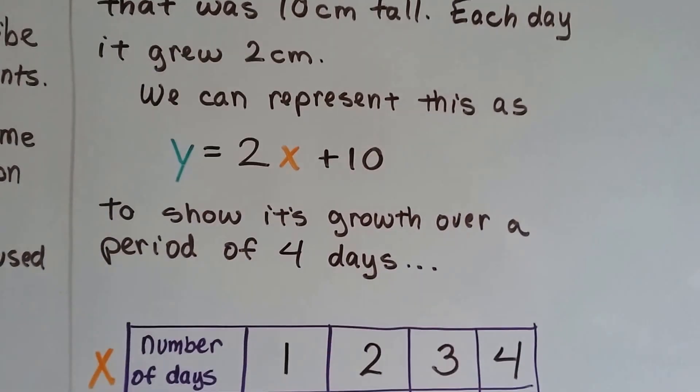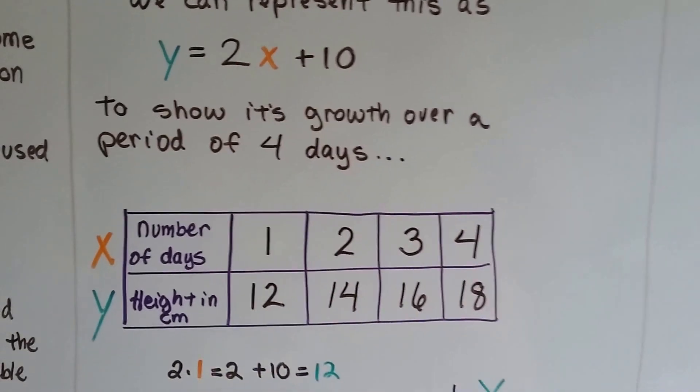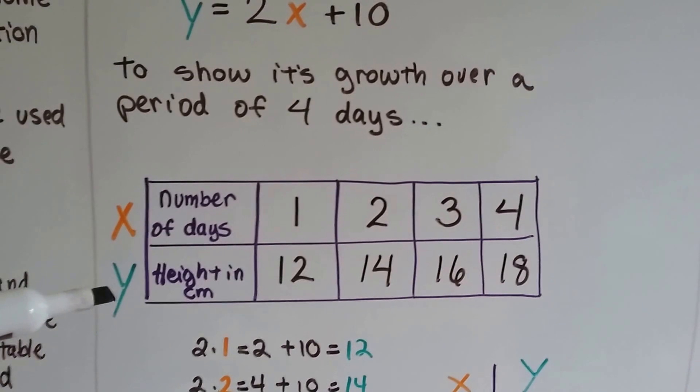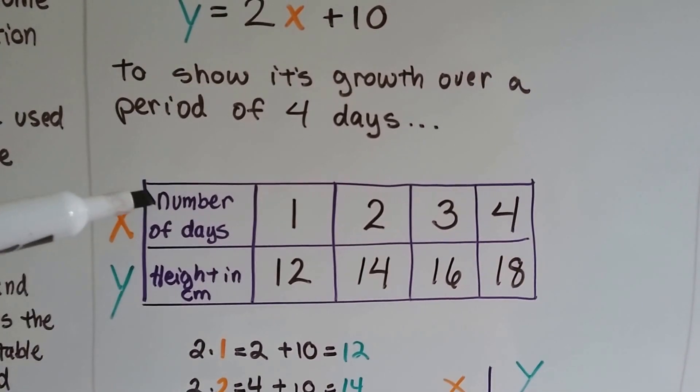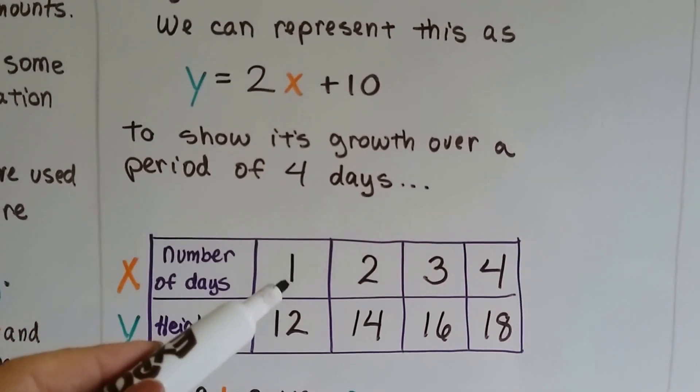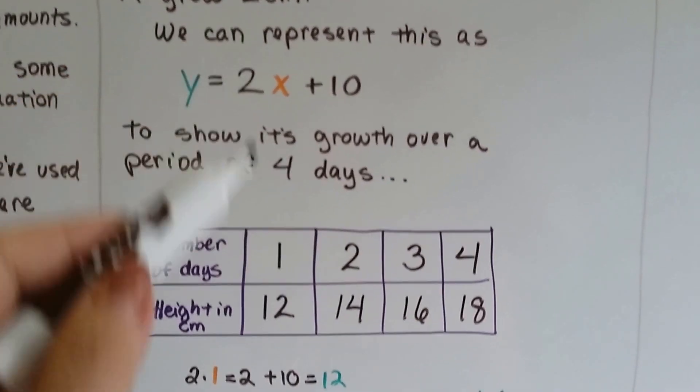We can show its growth over a period of 4 days with this table. The number of days is x, and the height is y. That's the output, that's the input. So in one day it grew 2 centimeters, because it grows 2 centimeters each day.